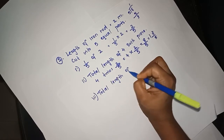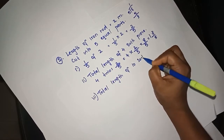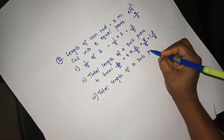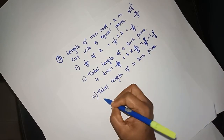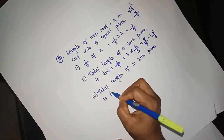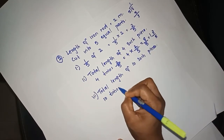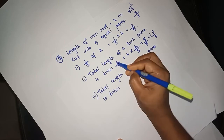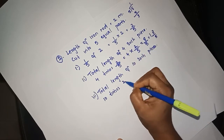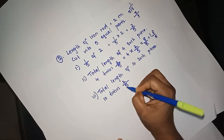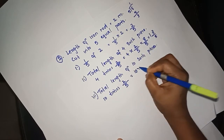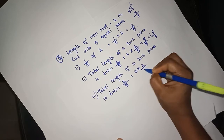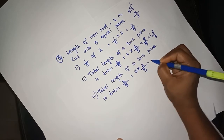The total length of 10 such pieces: 10 times 2/5. One piece equals 2/5, so 10 times 2/5.